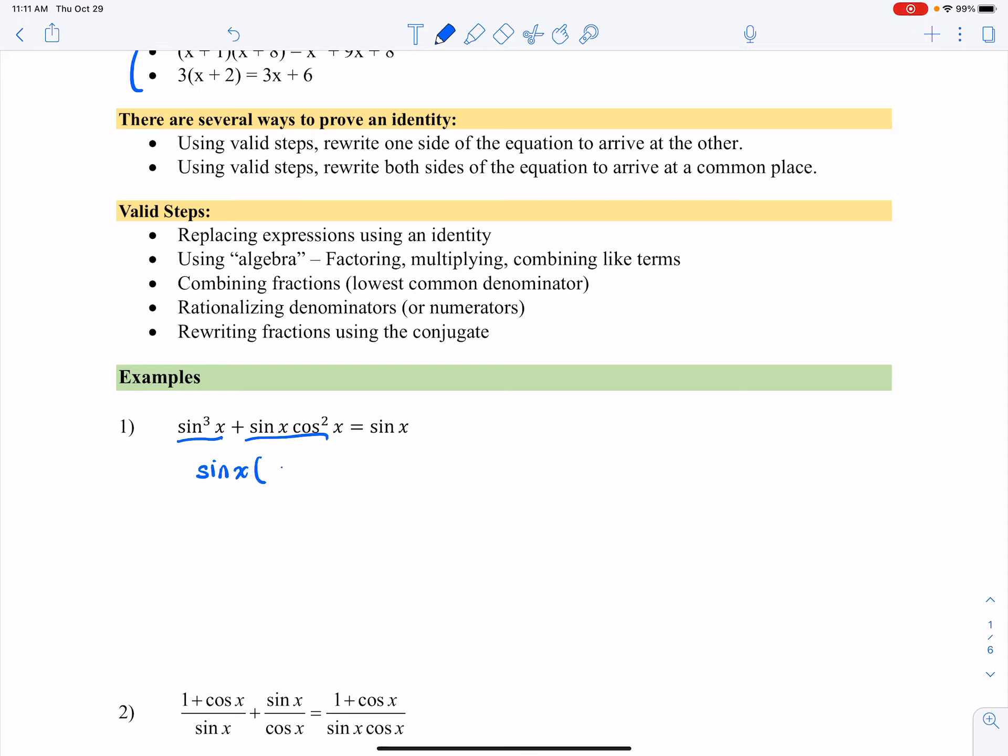When I factor out sine of x, I have sin²x plus cos²x. That should look familiar because we know that sin²x plus cos²x equals one. To justify each step, I got this by factoring. Then, very important, I'm going to put an equal sign there and replace sin²x plus cos²x with one. That is because of the Pythagorean identity.